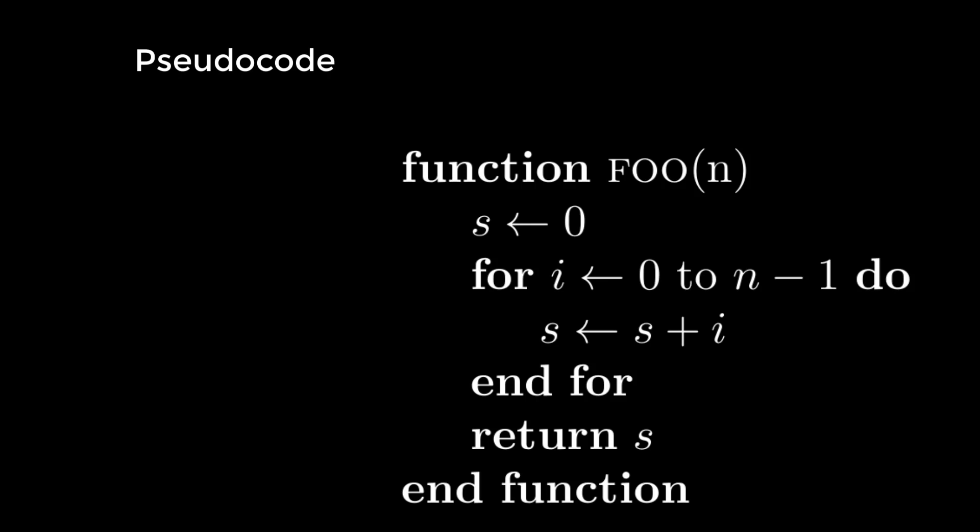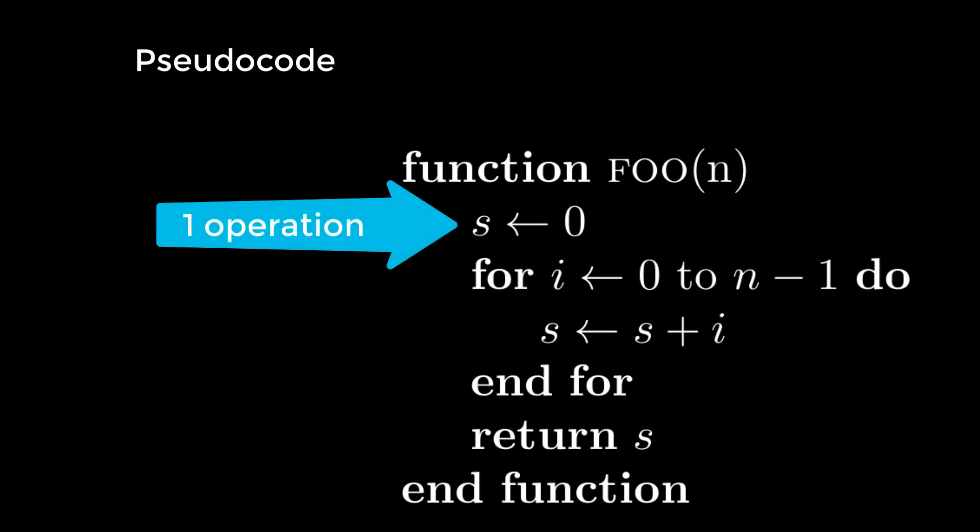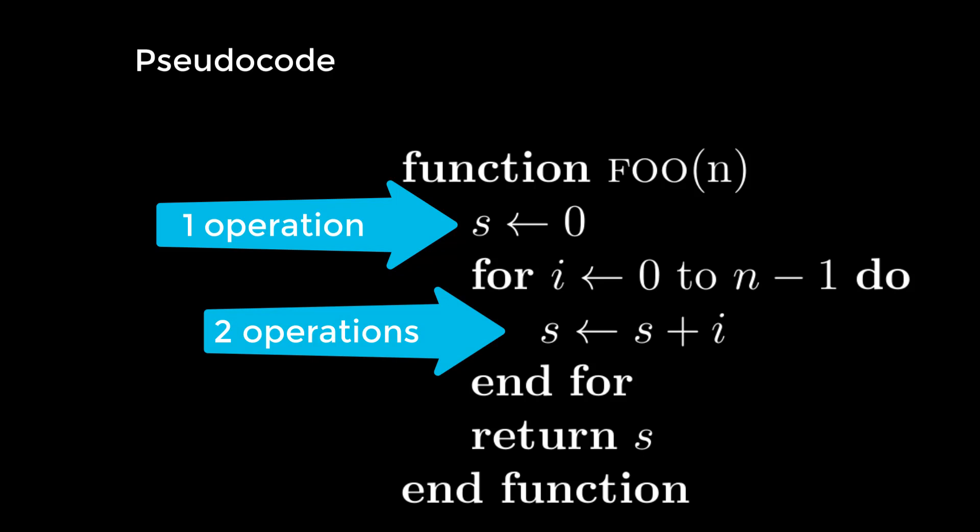So let's see. The first line of the code is setting s to 0. That seems like it might be just one operation. Then, we have this for loop, it's a little bit more complex, so let's skip it for now. We also have s is equal to s plus i. Okay, so depending on how you count, you might say that these are two operations: adding two numbers together, and also assigning the result to s. Finally, we return s, and this is again one operation.